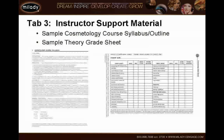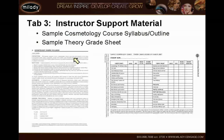Tab three contains instructor support material. There are two sample forms that are available and these are used to develop your program a little bit further if you'd like. The first one is the course syllabus — a course outline. The one in the binder is a sample for a 1500-hour cosmetology program. It is a brief two-page document that contains all the elements required in a course outline, to provide you assistance in developing a course syllabus specific to your program at your institution. The second form is a theory grade record — a way to document theory tests for your students. It lists each of the tests found in the course management guide.